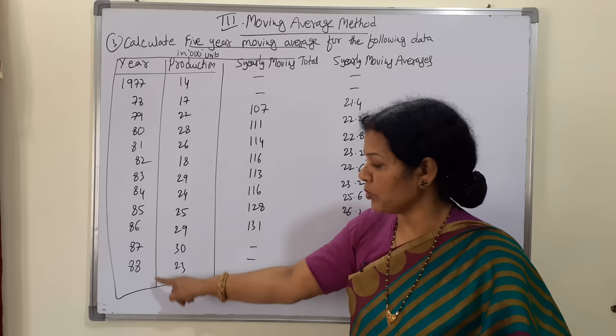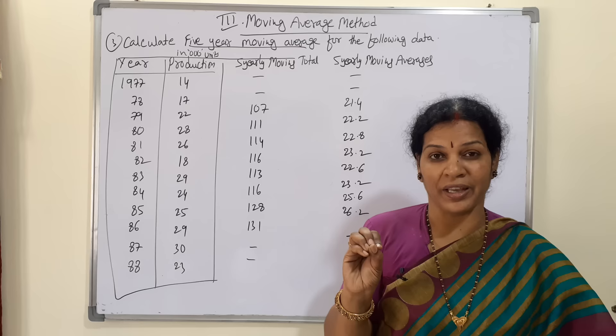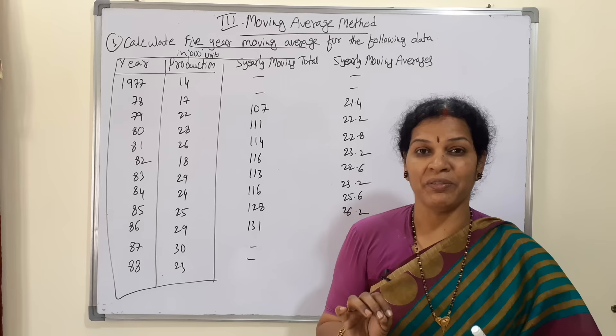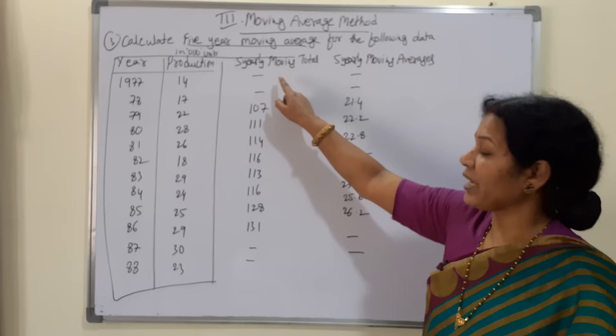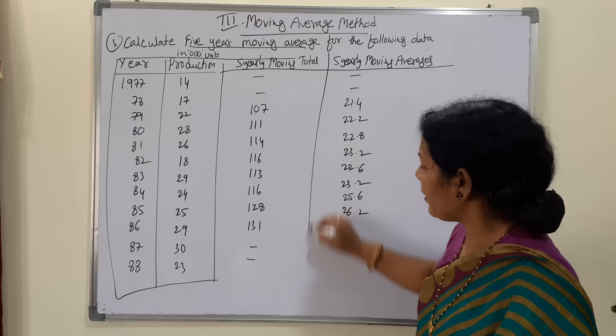The data has many years and production in thousand units. We have to calculate the five-year moving average. What we have to do first is find the total of five years — the five-year moving total. Then after that, the five-year moving average.